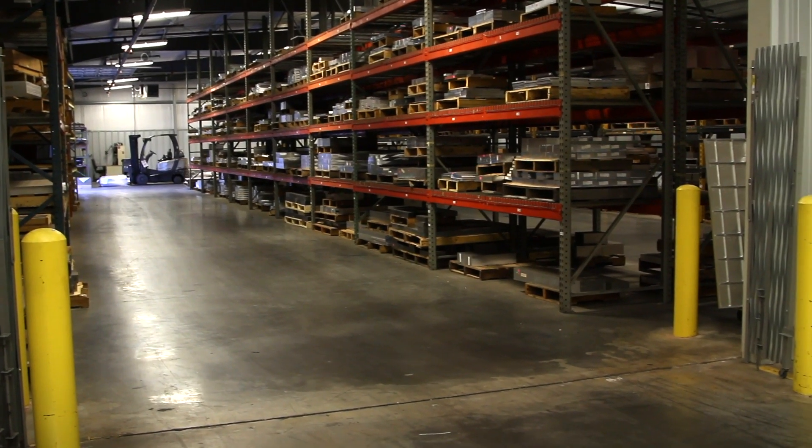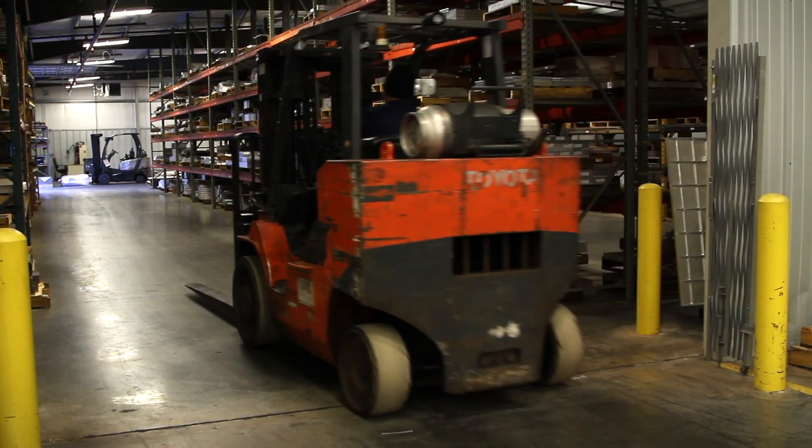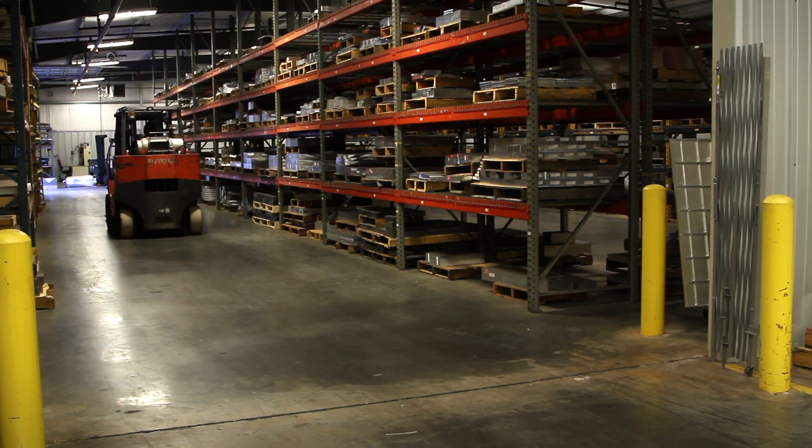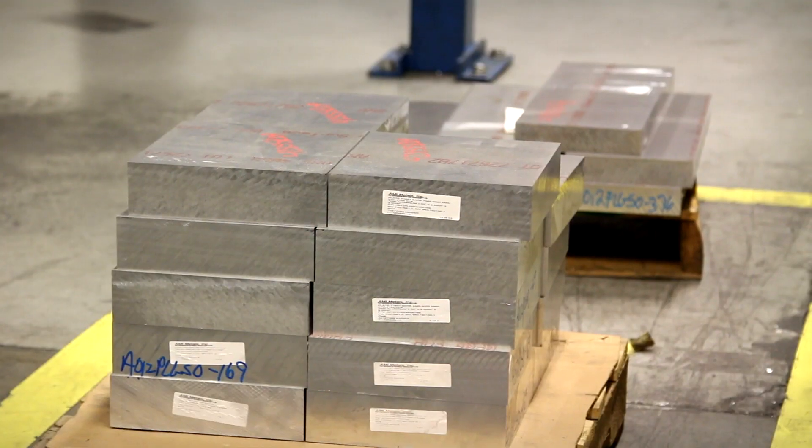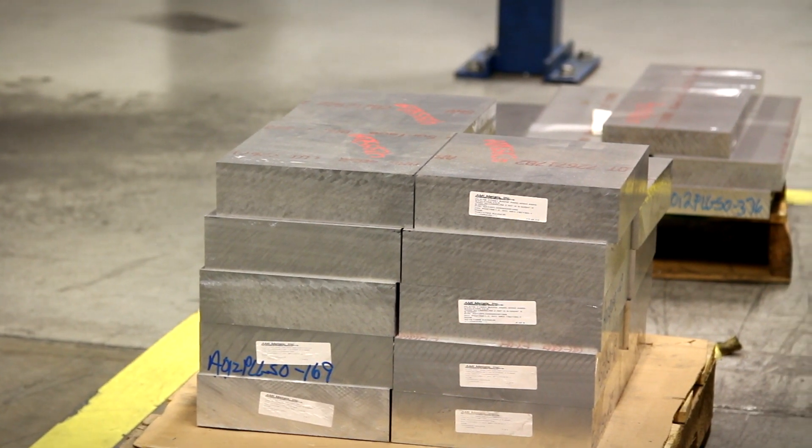Each part starts in the metal warehouse. A forklift operator distributes various metals to each machine that it will be cut on. In aircraft design, the most common metals are aluminum and titanium because of their high strength-to-weight ratio.